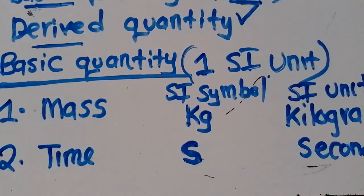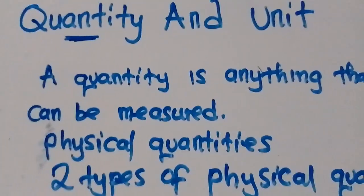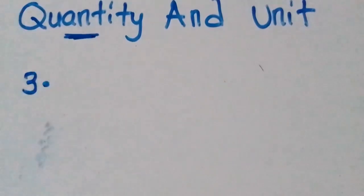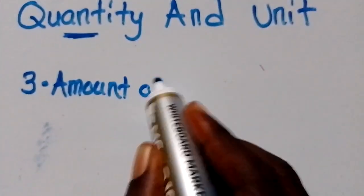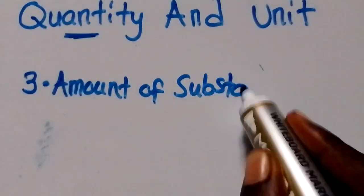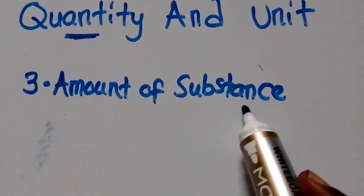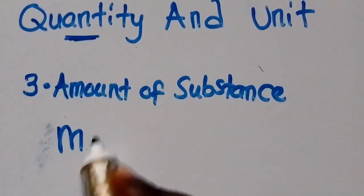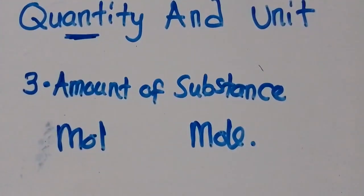Let us move to the third one. Under basic quantities, the third one is amount of substance. Amount of substance is a basic quantity. Its SI symbol is 'mol' and the SI unit is mol. This is how we write it.